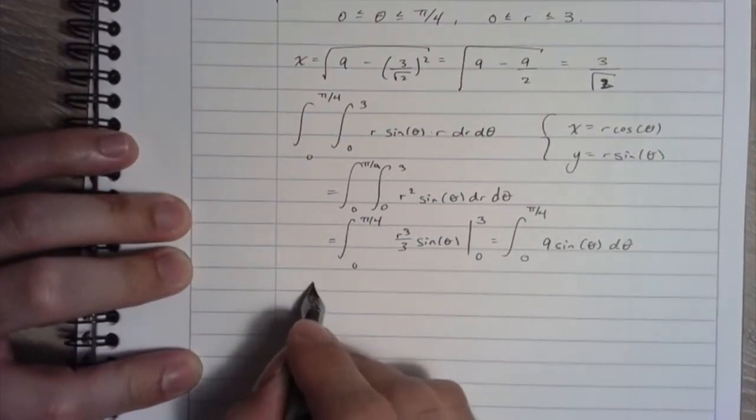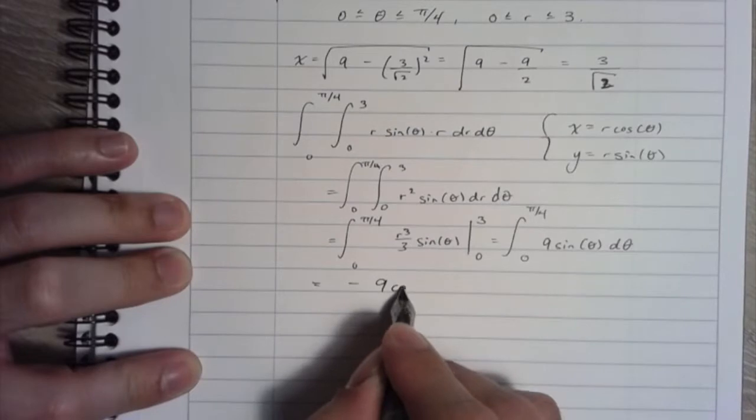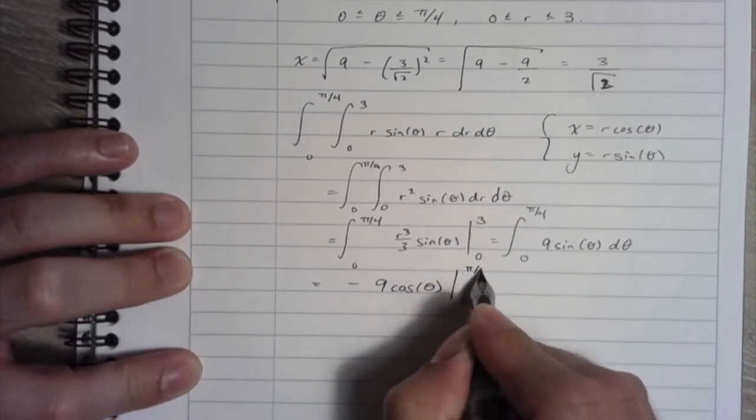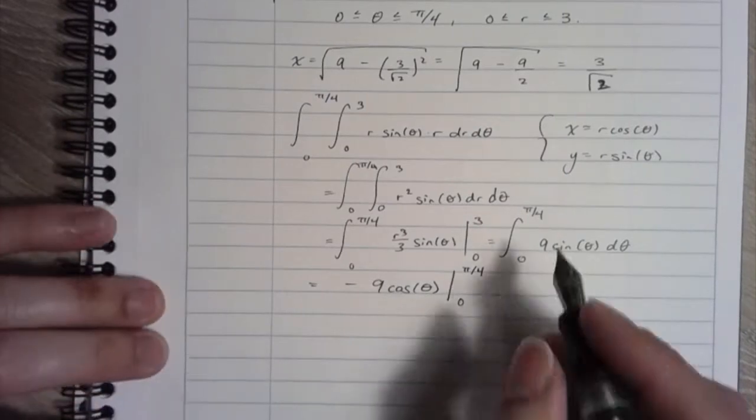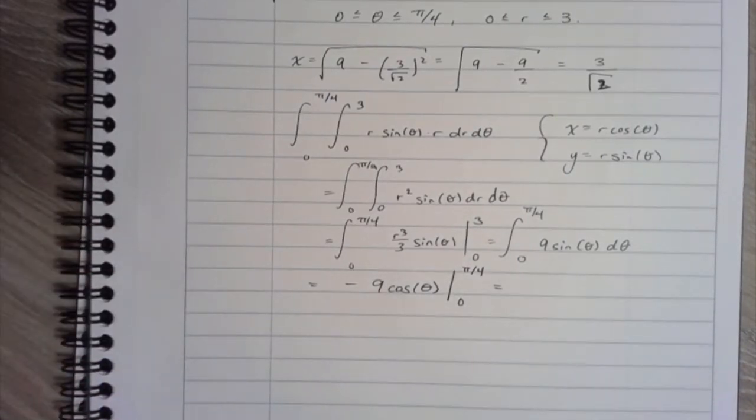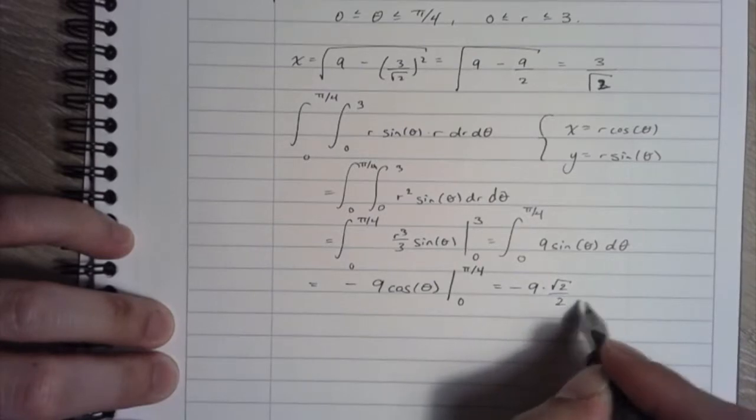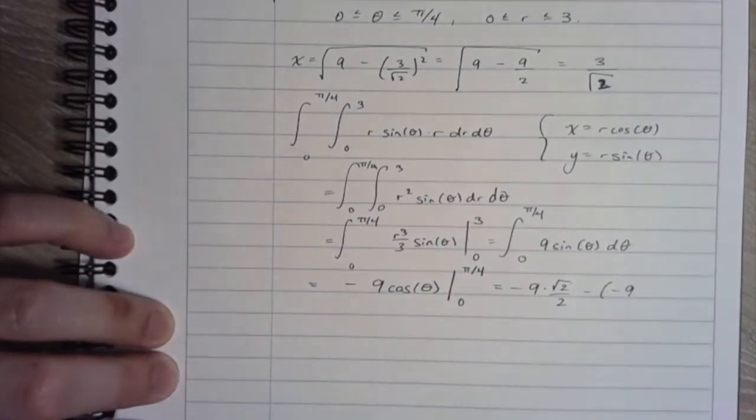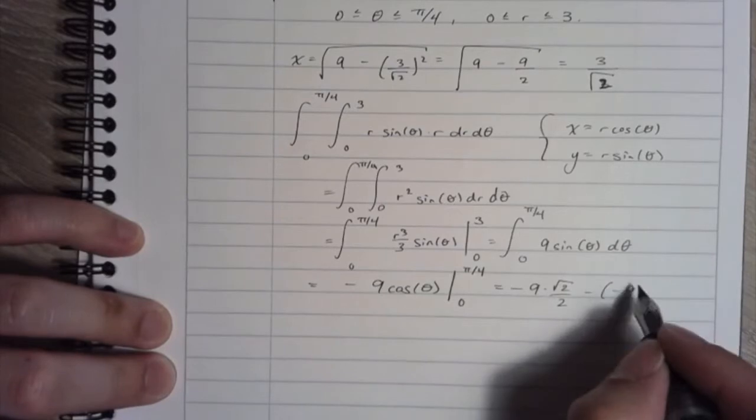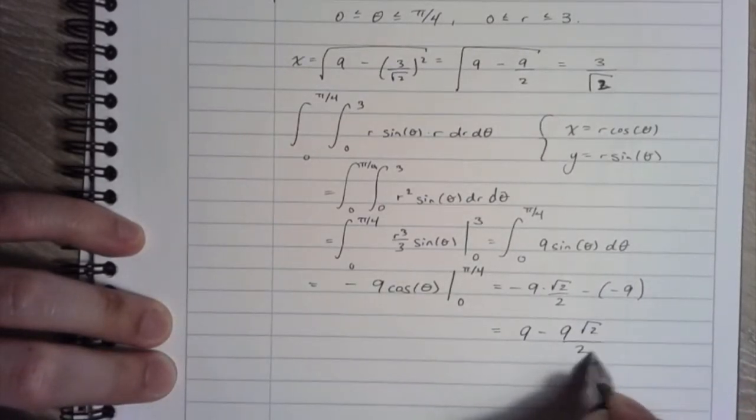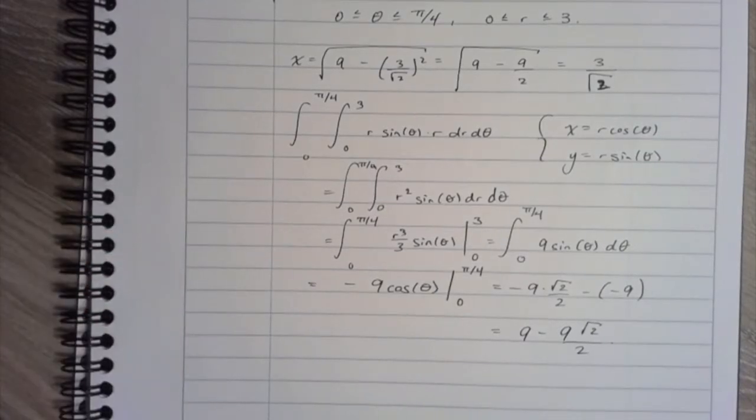Great, so negative 9 cosine theta, and we're evaluating from 0 to pi over 4. So cosine at pi over 4 is root 2 over 2. And cosine of 0 is 1. So in the end, this is 9 minus 9 root 2 over 2. And that's the integral.